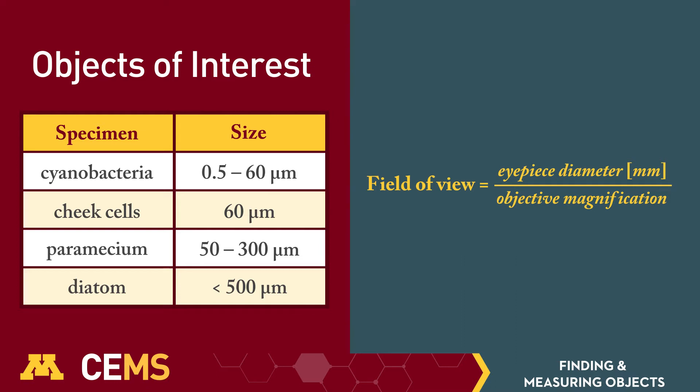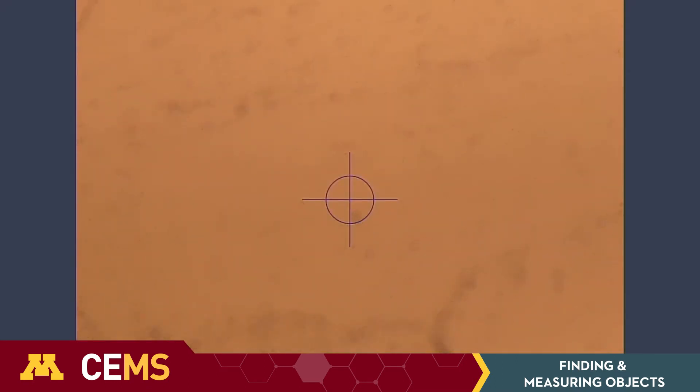Sometimes there are multiple objects that you can focus on, and you will have to use common sense to figure out which one is your object of interest. Other times it won't be possible to get every object in the field of view in focus at the same time, so you will have to focus on one object.